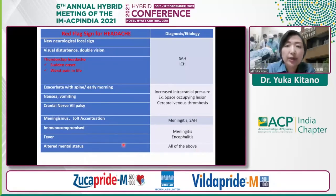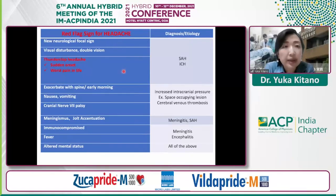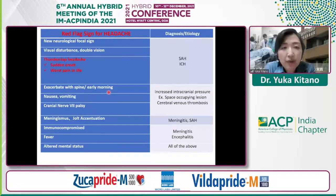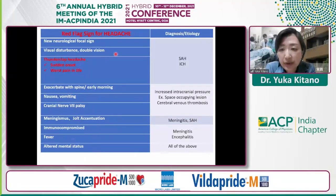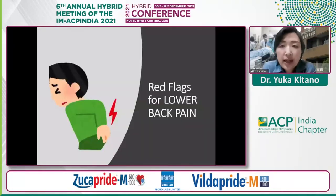These are the red flags for headache and their corresponding diagnoses. In subarachnoid hemorrhage or intracranial hemorrhage, patients may have neurological deficits, visual disturbance, and — as in our sample case — thunderclap headache. In any increased intracranial pressure state — such as brain metastasis, brain tumor, or sinus thrombosis — patients may have worsening headache in the morning or with movement, nausea, vomiting, or cranial nerve VII or abducens nerve palsy. Meningeal irritation signs or fever may be seen in meningitis. Altered mental status is always a red flag. By going through these red flags, early career physicians can have the same thorough approach for our patients.